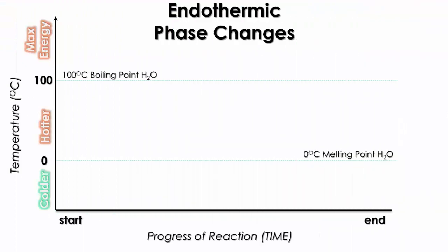When we look at a phase change diagram, the bottom axis represents time, the amount of time that it took for the sample to undergo the phase change. While on the y-axis, it tells us the temperature at which different changes occur.